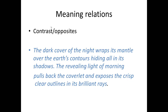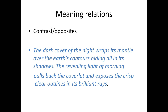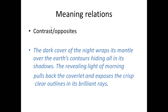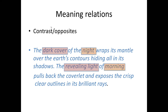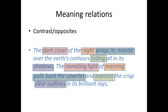Another type of meaning relation is contrast and oppositeness in meaning. The following text is largely built on a series of contrasts: 'The dark cover of the night wraps its mantle over the earth's contours, hiding all in its shadows. The revealing light of morning pulls back the coverlet and exposes the crisp clear outlines in its brilliant rays.' The contrasts include dark cover and revealing light, night and morning, wraps its mantle and pulls back the coverlet, hiding and exposes, shadows and clear outlines.